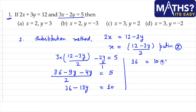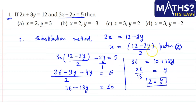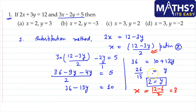From 36 - 13y = 10, we get 13y = 26, so y = 2. We then substitute y back to find x. Putting y = 2 into x = (12 - 3y)/2 gives x = (12 - 6)/2 = 3. So x = 3 and y = 2.